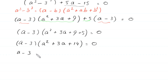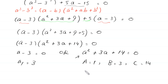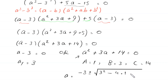From here, either a minus 3 equals 0, or a squared plus 3a plus 14 equals 0. From the first equation we get a equals 3. For the quadratic equation, a equals 1, b equals 3, and c equals 14. According to the quadratic formula, a equals negative b plus or minus square root of b squared minus 4ac, divided by 2a, which gives negative 3 plus or minus square root of 3 squared minus 4 times 1 times 14, divided by 2.